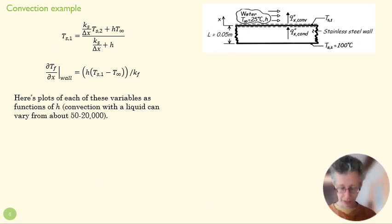Here are two equations for our surface temperature and our temperature gradient. We're going to plot those values as a function of h. You can see that h appears in both of those equations from 50 to 20,000. The reason we chose those values is because those are the two extremes of the convection coefficient h that you can get when you have a liquid as your fluid.